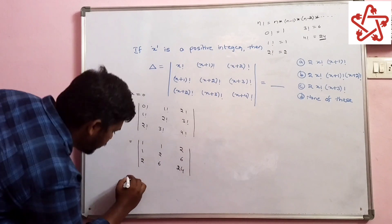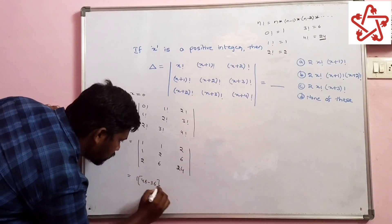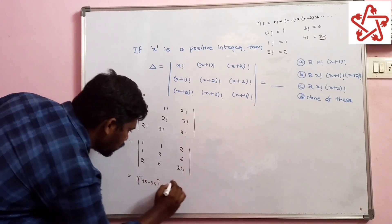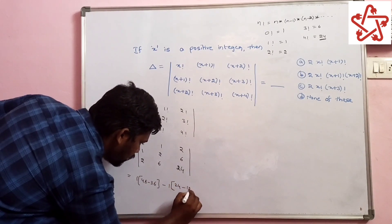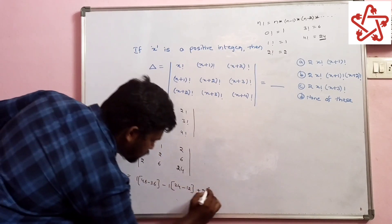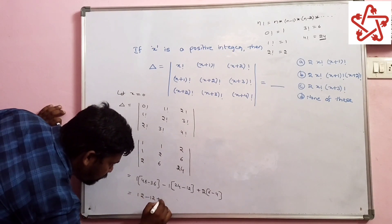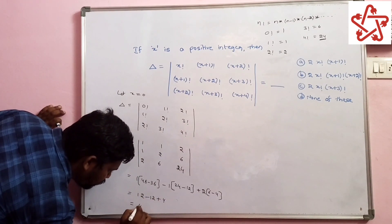Now find the determinant. 1 into 48 minus 36 minus 1 into 24 minus 12 plus 2 into 6 minus 4, equals 12 minus 12 plus 4, which is equal to 4.